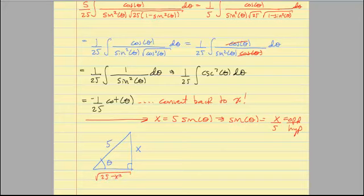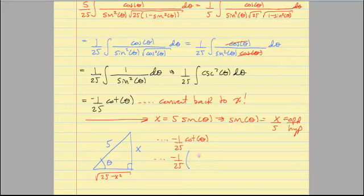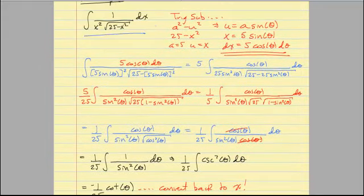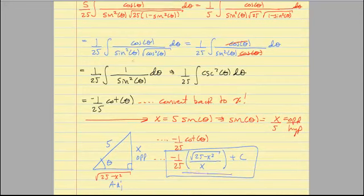We're looking for negative 1 over 25 times cotangent theta. Tangent is opposite over adjacent, so cotangent is adjacent over opposite. In this case, my adjacent leg is root 25 minus x squared, and my opposite leg is x. So cotangent is adjacent over opposite from angle theta, giving the final answer of negative 1 over 25 times root 25 minus x squared over x, plus C. That is my integral. The original function was in terms of x, and now the solution is in terms of x as well. These are fairly lengthy problems — stick with them, remember your trig identities, remember your substitutions, and remember to convert back, and they work out pretty slick.